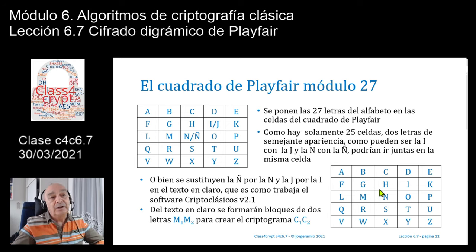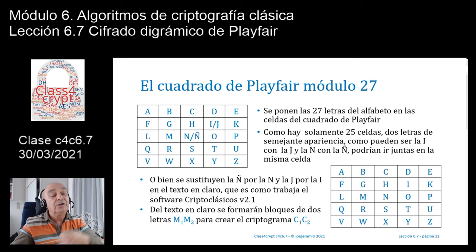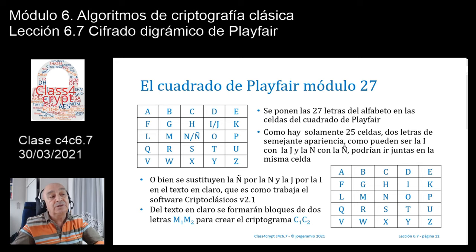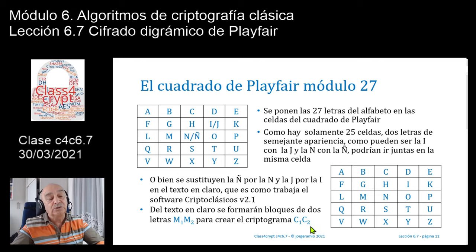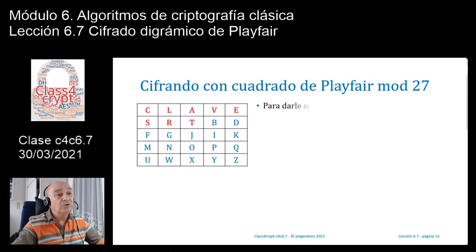Lo que haremos es ir leyendo el texto en claro de dos letras en dos letras. Si el mensaje era 'Hola mi querido amigo', voy a leer la H y la O, luego la L y la A de Hola, luego la M y la I de mi querido amigo, etc. Y entonces voy a buscar en esta matriz de 5x5 dónde se encuentran las letras M1 y M2 y, en función de dónde se encuentren, con un conjunto de reglas que veremos a continuación, voy a saber cuál va a ser el criptograma asociado C1 y C2.